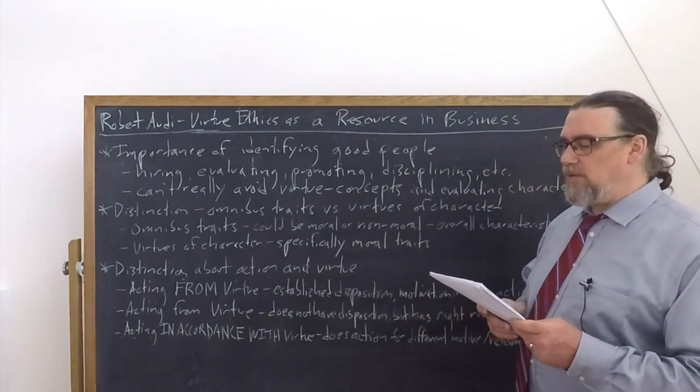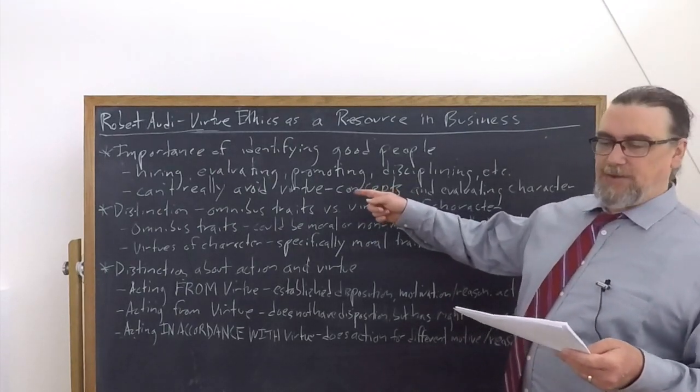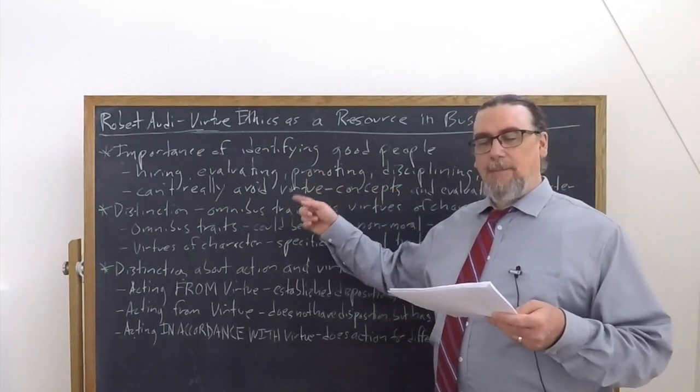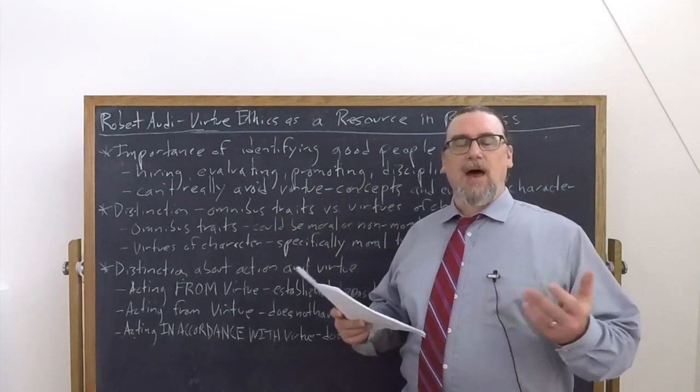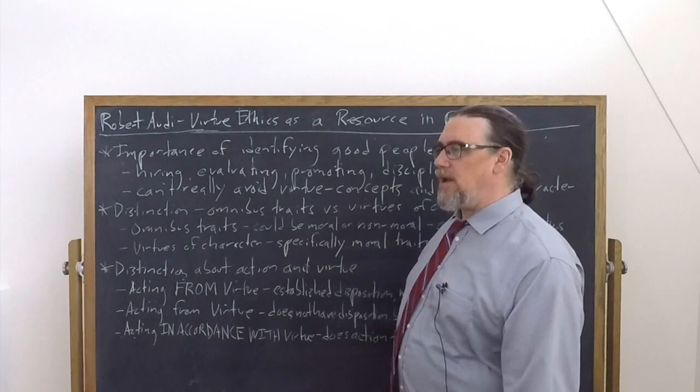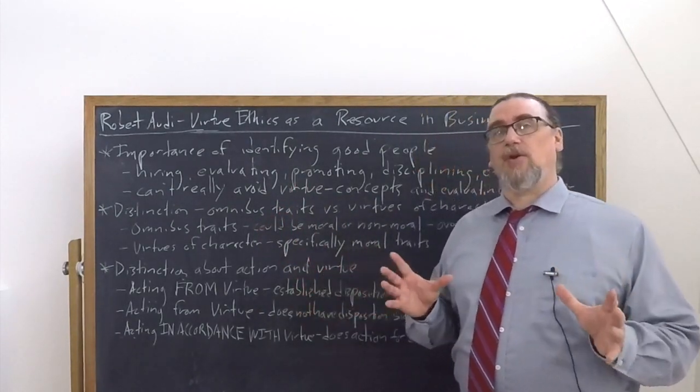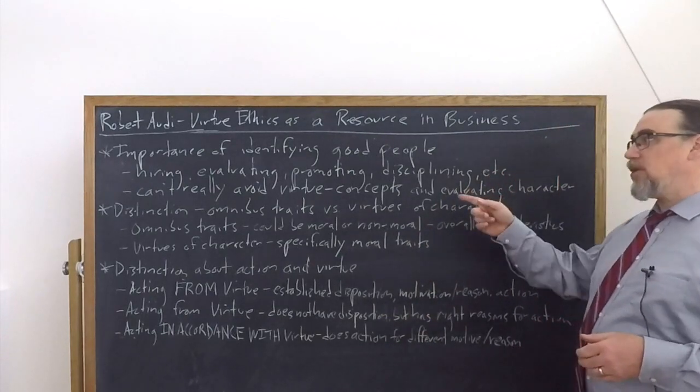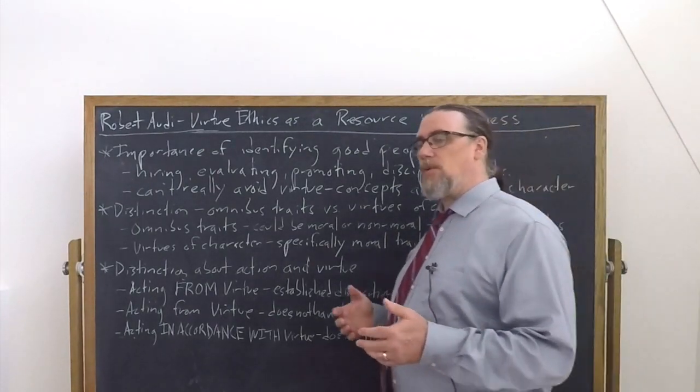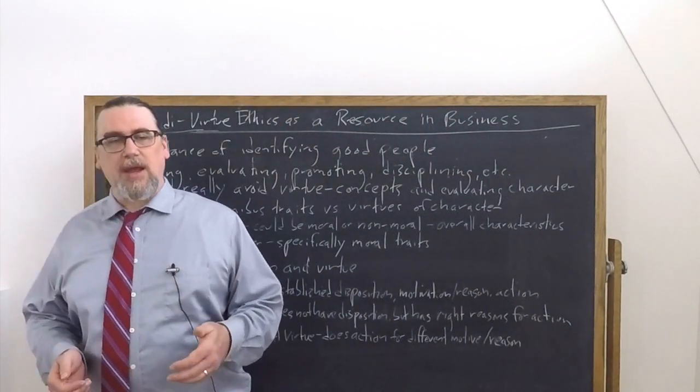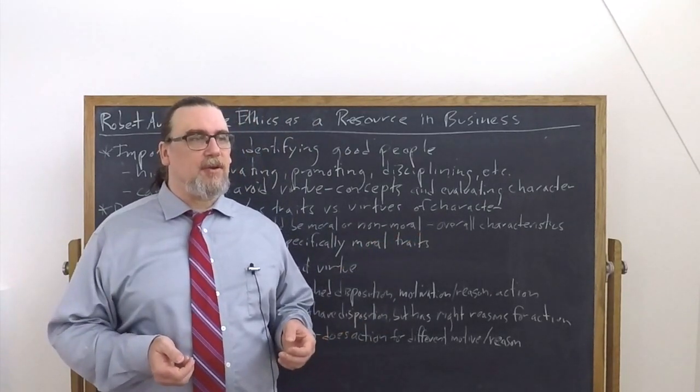So he goes on and he says, in order to understand moral virtue adequately, one thing that could be helpful for us to make a distinction is about omnibus traits and virtues of character. When we talk about omnibus traits, we mean things that are covering everything and we evaluate people in terms of them. They could be ethical or moral, or they could be non-ethical, non-moral.